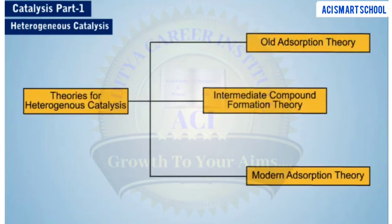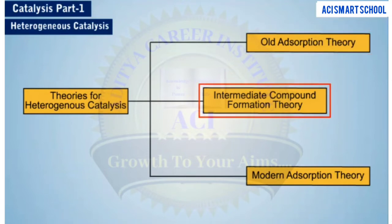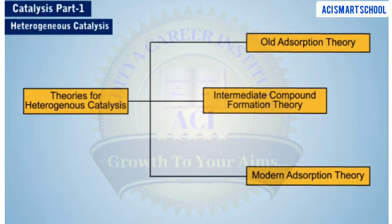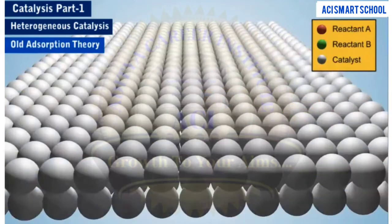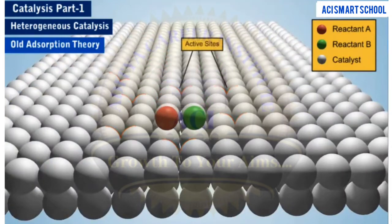Diverse mechanisms of heterogeneous catalysis are known. We will discuss three theories of heterogeneous catalysis, namely the old adsorption theory, the intermediate compound formation theory, and the modern adsorption theory. Let us first discuss the old adsorption theory. According to the old adsorption theory, the reactants in the gaseous phase and the solution phase are adsorbed at the active sites on the surface of the catalyst.